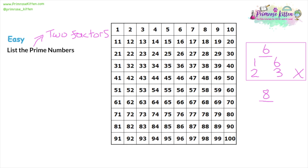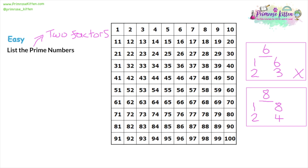Now let's look at eight. Eight divided by one is eight, so one and eight are both factors. Moving up to two: eight divided by two is four, so two and four are also factors. Then eight divided by three — well, in the three times table you have three, six, and nine, which misses out eight, so three is not a factor. When we move up to four, we already have four in the list, so once you start repeating yourself, you know you've finished. Eight has four factors, so eight is not a prime number.